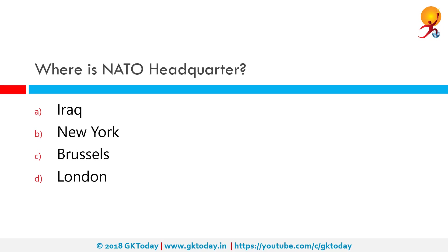Where is NATO Headquarters? The North Atlantic Treaty Organization, or NATO, is an intergovernmental military alliance between 29 North American and European countries. The organization implements the North Atlantic Treaty, signed on 4th April 1949. It is headquartered at Brussels.